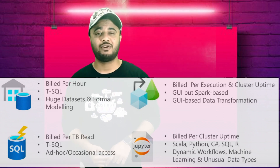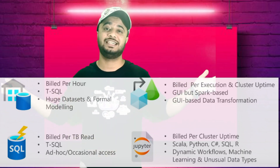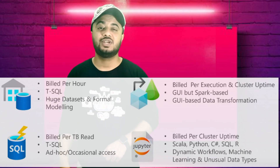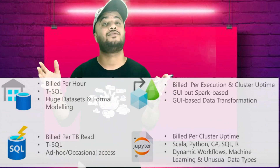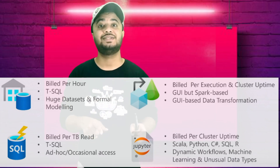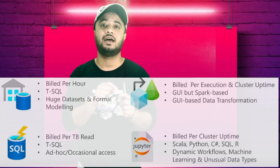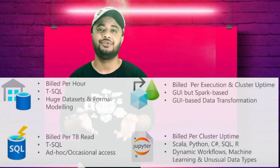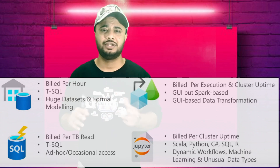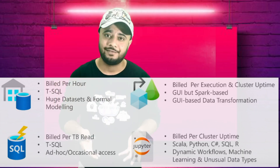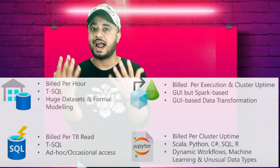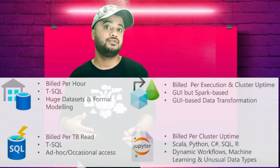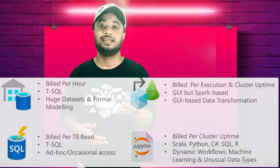Dedicated SQL pools work on T-SQL queries and are used for structured datasets and formal modeling. The second option is on-demand SQL pools. On-demand SQL pools are not billed per hour but are billed on the basis of terabytes of data that you read. On-demand itself suggests that whenever you need it you can launch this pool, do your data transformation, and turn it off. It also works with T-SQL and is an ad hoc feature provided for occasional access — useful for massive transformation workloads but not for storing data.